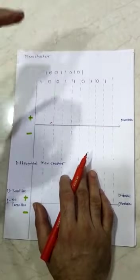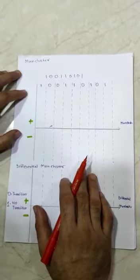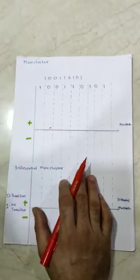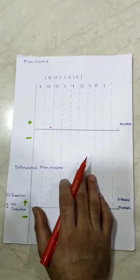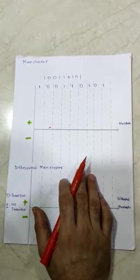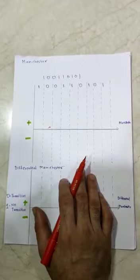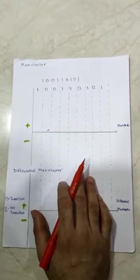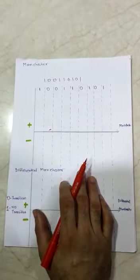In Differential Manchester, on the other hand, it combines the idea of RZ and NRZ-I. There is a transition at the middle of the bit, but the bits are determined at the beginning of the bit only.